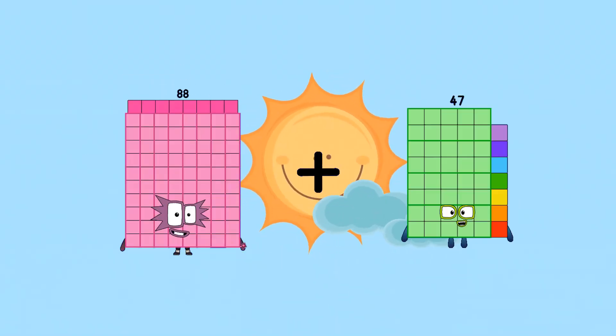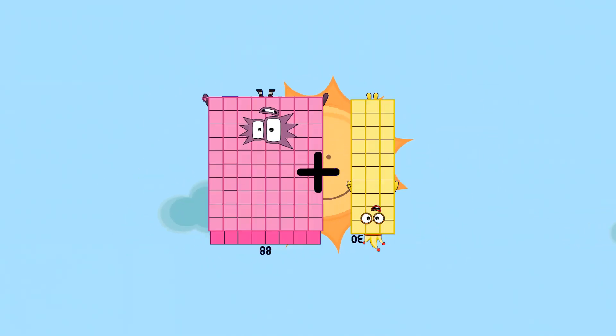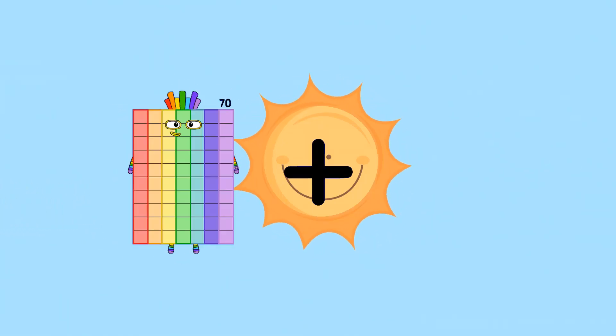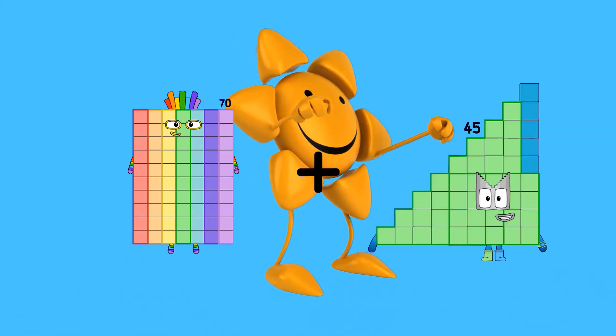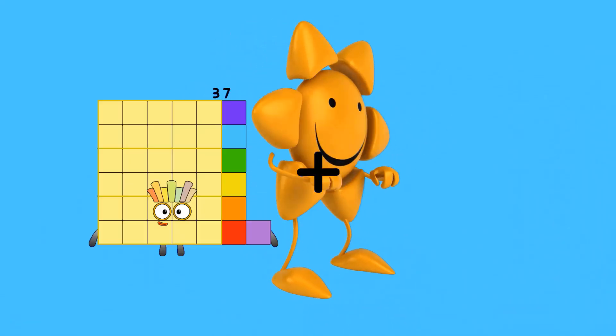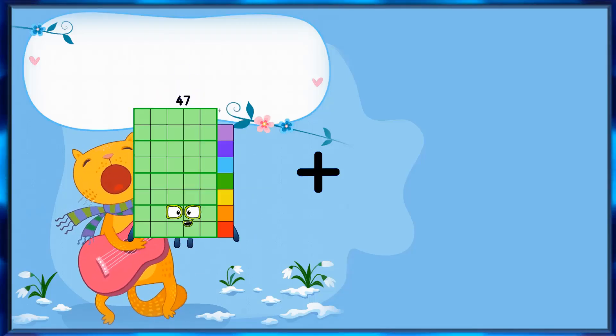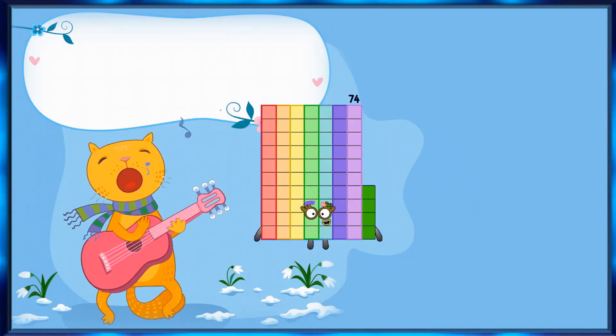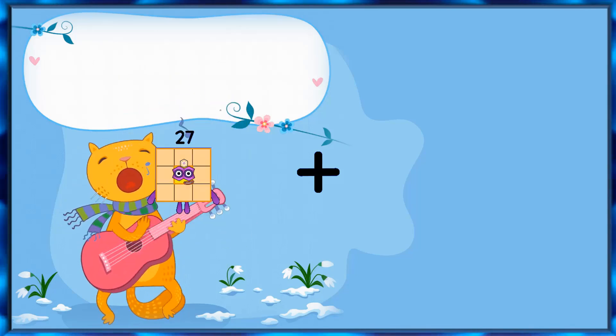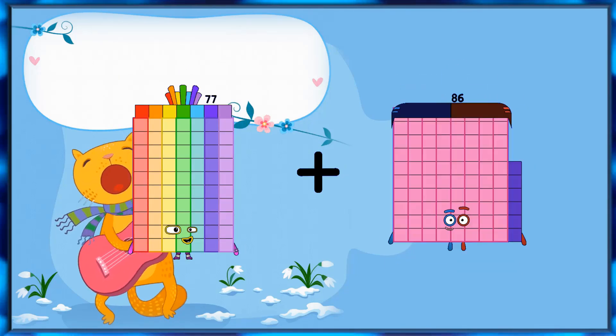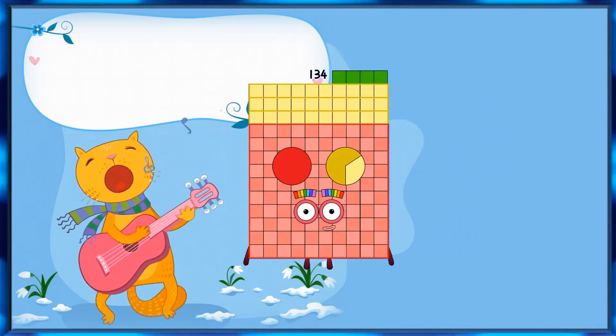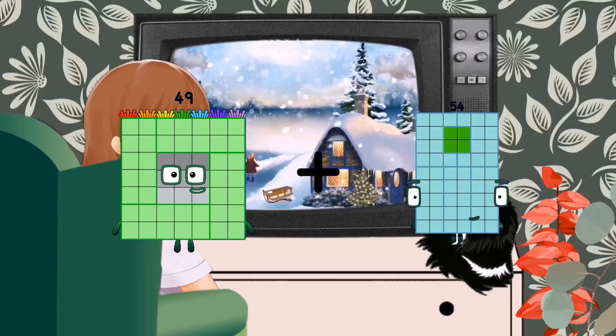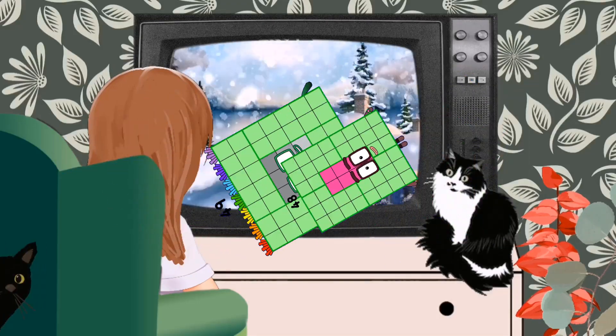88 plus 30 equals 118. 70 plus 45 equals 115. 47 plus 27 equals 74. 74 plus 60 equals 134. 49 plus 48 equals 97.